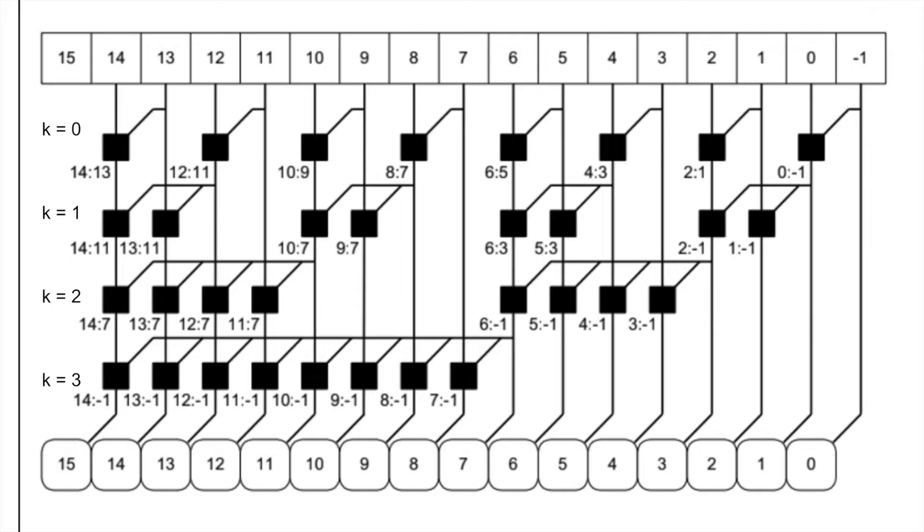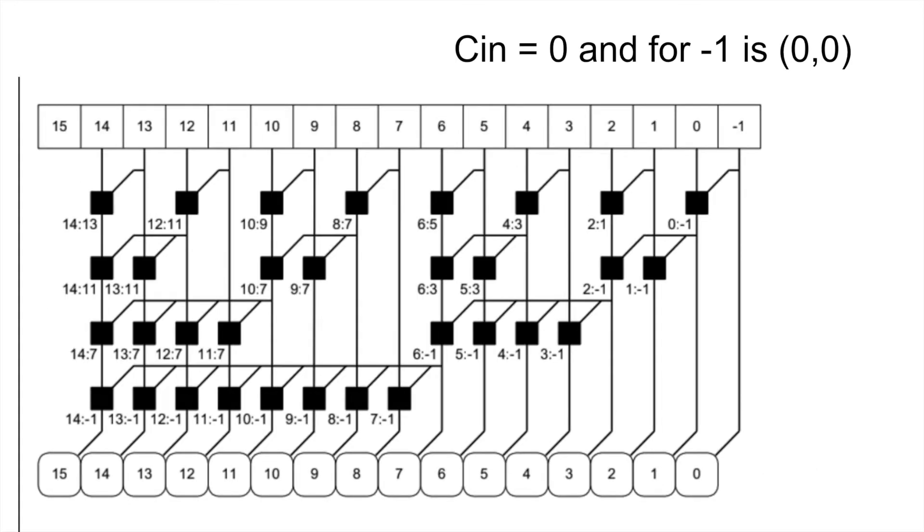And then many people were confused on what's the k when you do all the calculations. So k is the level, so the first line of the black box are k equals 0, the second one k equals 1, third one k equals 2, and the last one is k equals 3. And there's something that you need to know, the cin in all the cases are equal 0, and then for the negative one on the top right corner you will put in 0, 0.